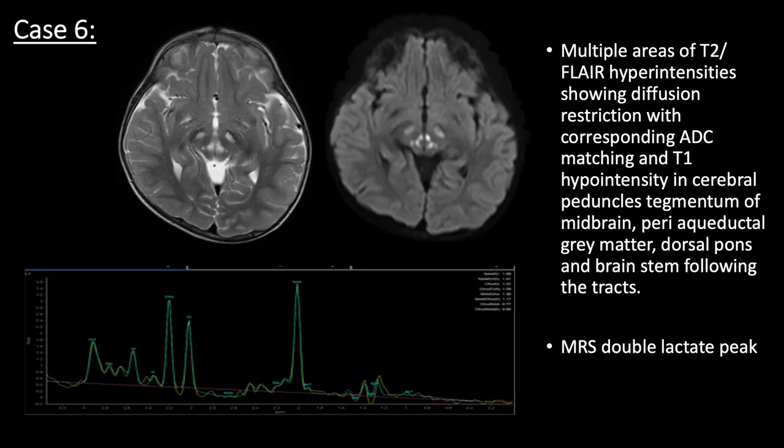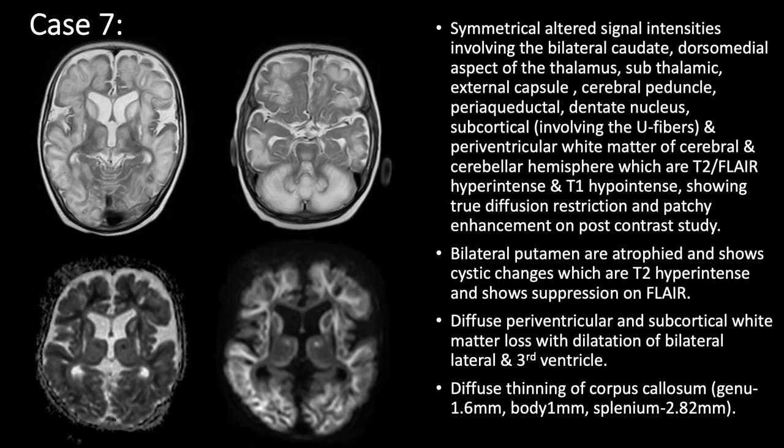This is a case of a 2-year-old patient, which shows T2 FLAIR hyperintensities in bilateral periaqueductal gray matter, dorsal pons, and the tracts of brain stem. MRS shows double lactate peak on the lesions.